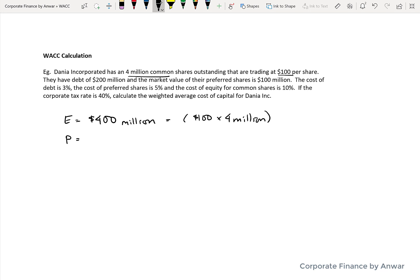is going to be $400 million in market value. And the way that's calculated is the $100 per share times the 4 million shares that are outstanding. So essentially that's the market capitalization of the company, the total value of the common shares.